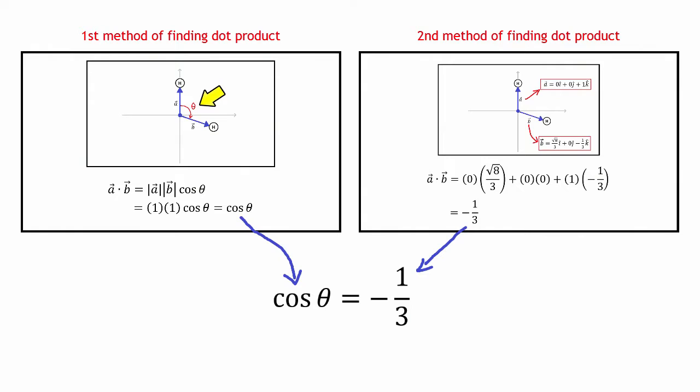So we have the equation: cosine theta equals negative one-third. Solving for theta gives the inverse cosine of negative one-third, which comes out to 109.5 degrees — exactly the bond angle we knew from chemistry class. That's the first method of proving the bond angle of methane.